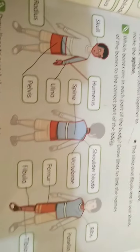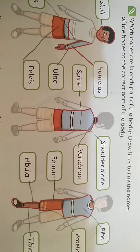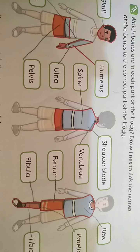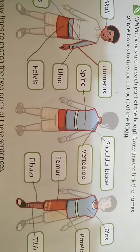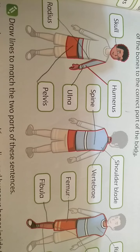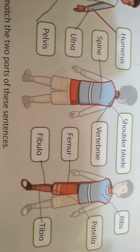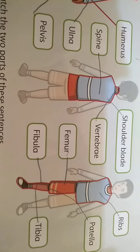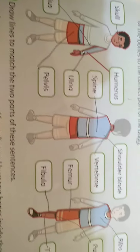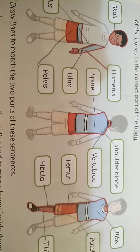Here are two activities on page 7 of your book. The first activity asks: which bones are in each part of the body? Draw lines to link the names of the bones to the correct part of the body. The options given are: skull, radius, humerus, spine, ulna, pelvis, shoulder blade, vertebrae, femur, fibula, ribs, patella, and tibia. Now start matching each word with the exact portion on the diagram.